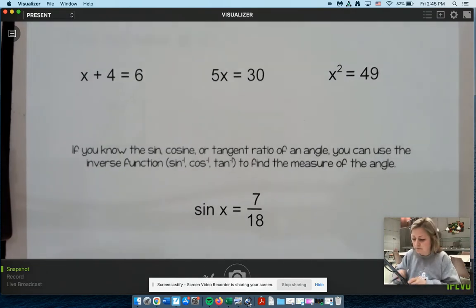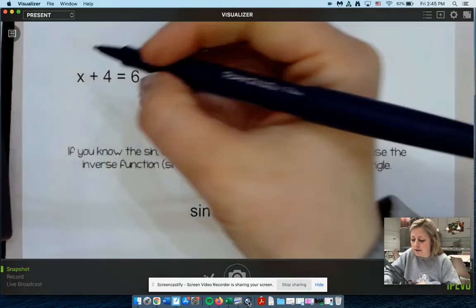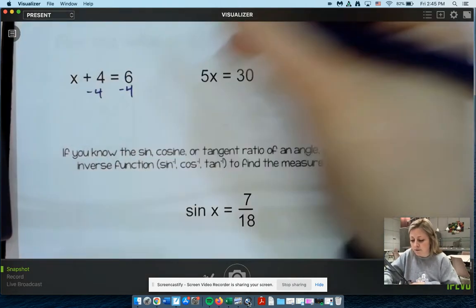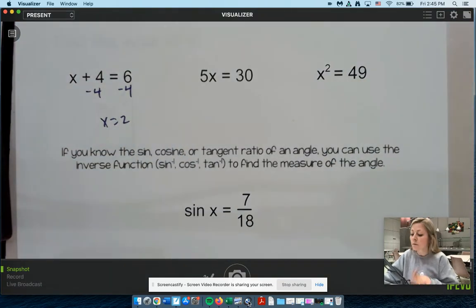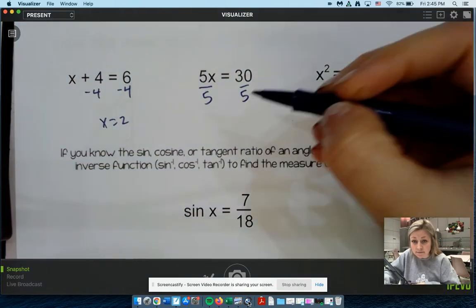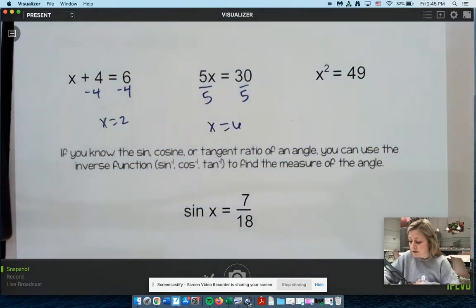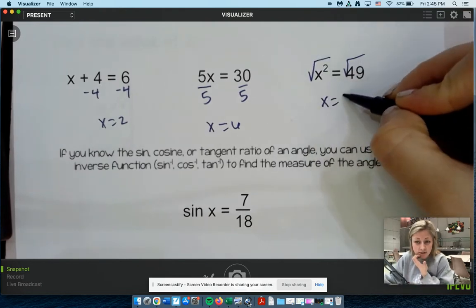So we do this all the time. How do I get x by itself? We subtract 4, right? And then we'd find that x equals 2. How would I get x alone in the middle one? Well, we would divide by 5. And we'd find that x equals 6. And how do you undo something squared? Well, we take the square root. And we'd find that x is 7.